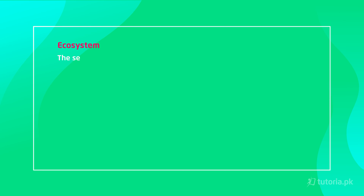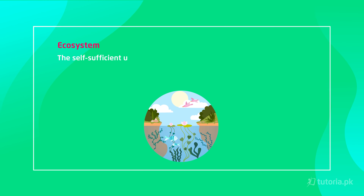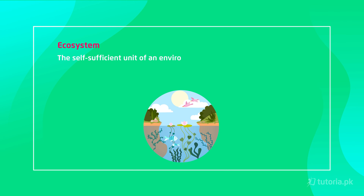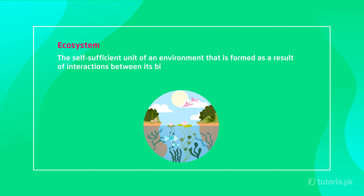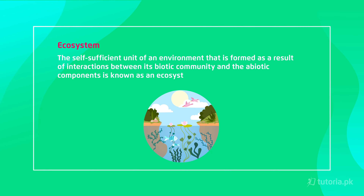Now what is an ecosystem? The self-sufficient unit of an environment that is formed as a result of interactions between the biotic community and the abiotic components is called an ecosystem.